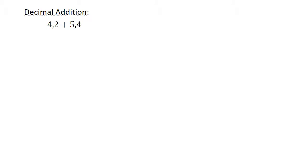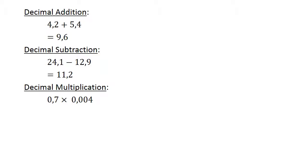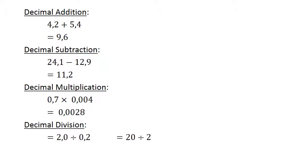Decimal addition: 4.2 plus 5.4 equals 9.6. Decimal subtraction: 24.1 minus 12.9 equals 11.2. Decimal multiplication: 0.7 times 0.004 equals 0.0028.